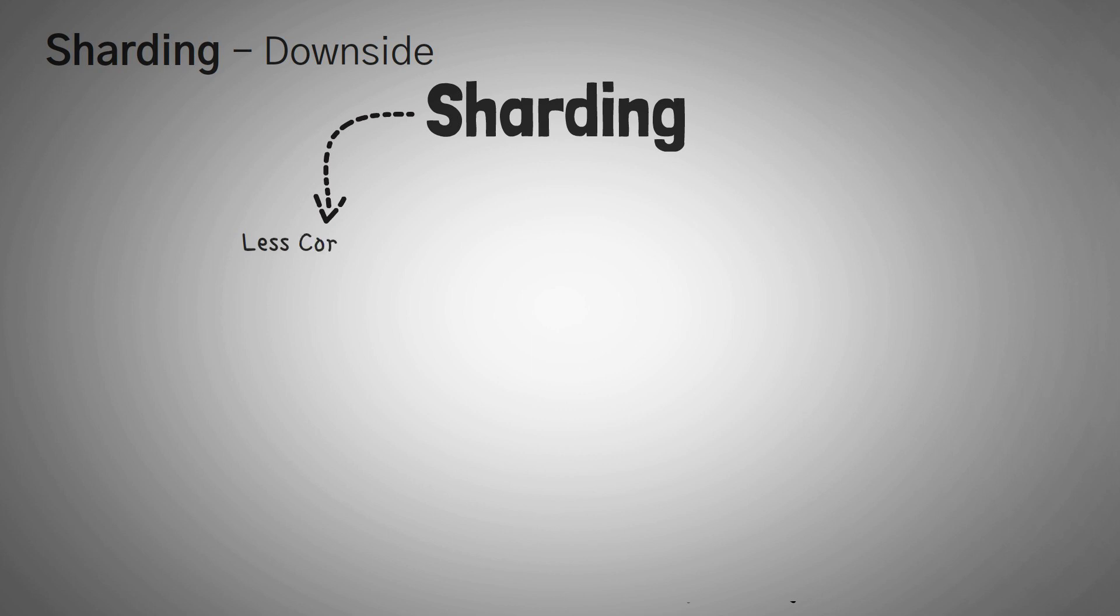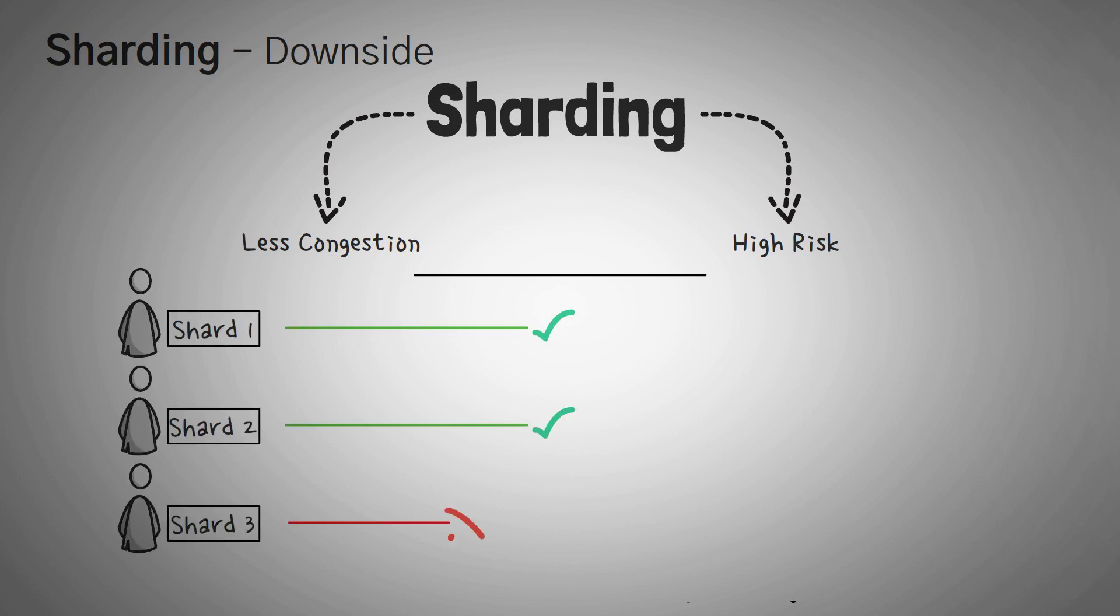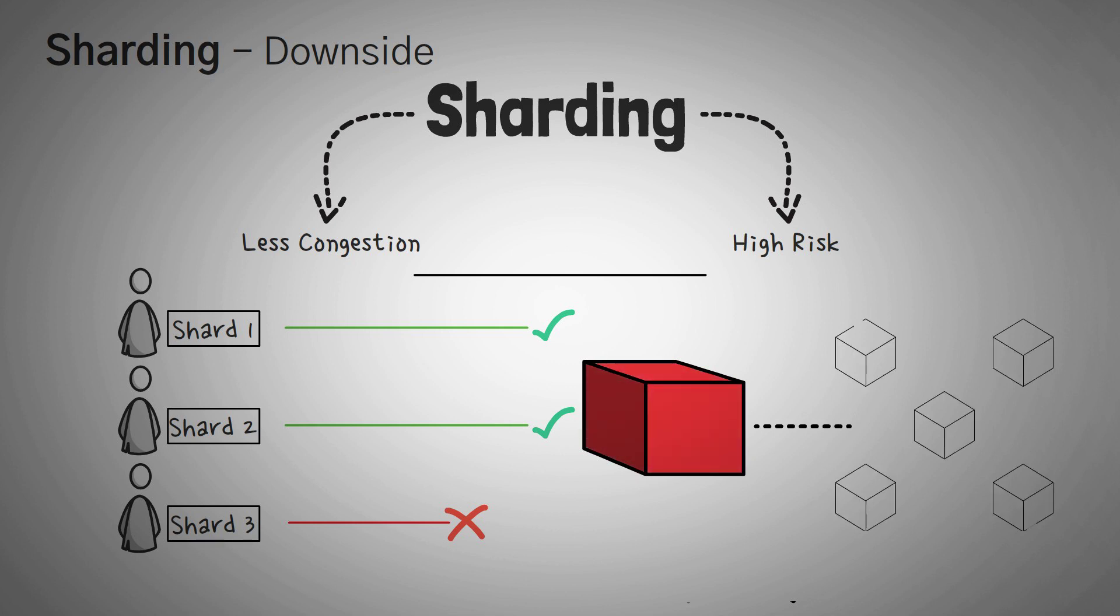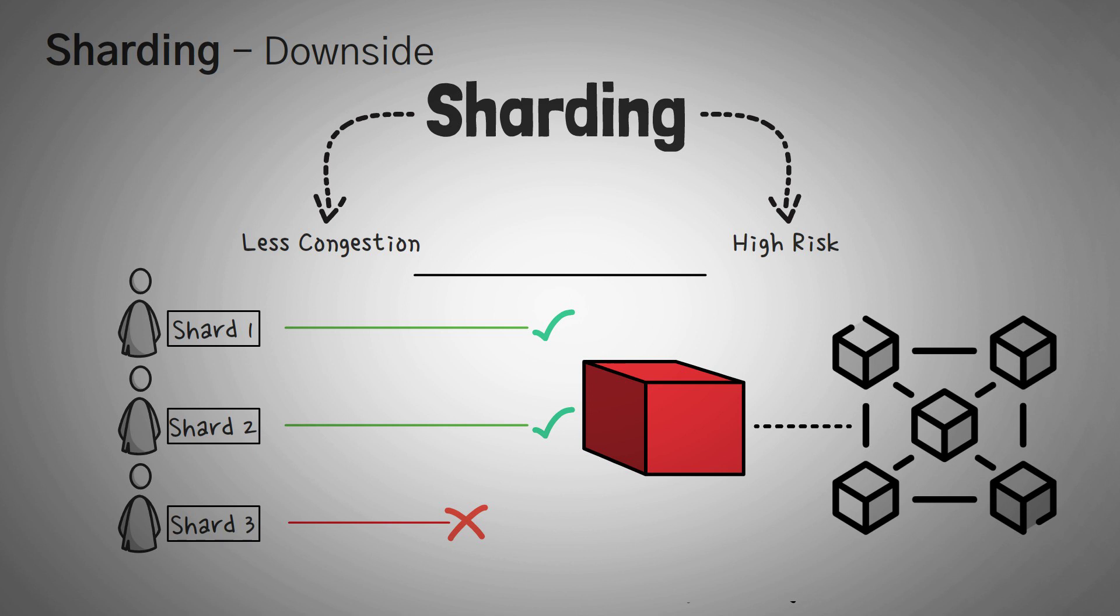Well, sharding might be able to scale, but introducing a few more highway lanes or shards can be a security risk. A bad actor could take over a shard and cause problems for the entire chain. For example, if there's 10 shards, it would be much easier to take over a tenth of the network and own that entire shard than it is to own the entire massive blockchain, if that makes sense.